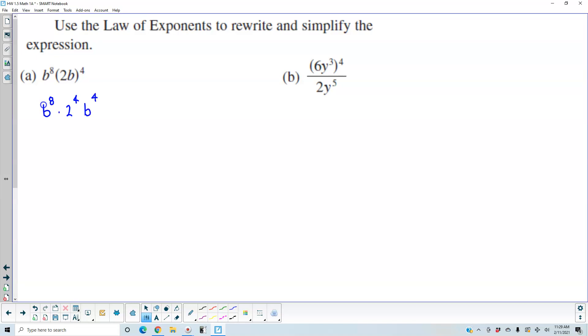So therefore this becomes 2 to the fourth times, when you have the same base and you're multiplying them, that becomes b to the 4 plus 8. Now 2 to the fourth power is 16 and adding those exponents gives you 12. So this becomes 16b to the twelfth.